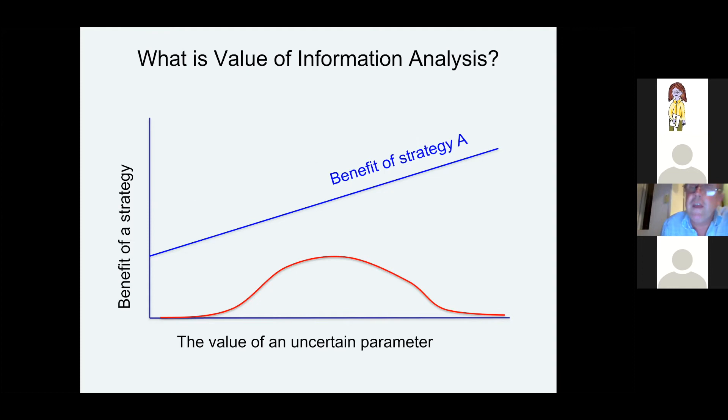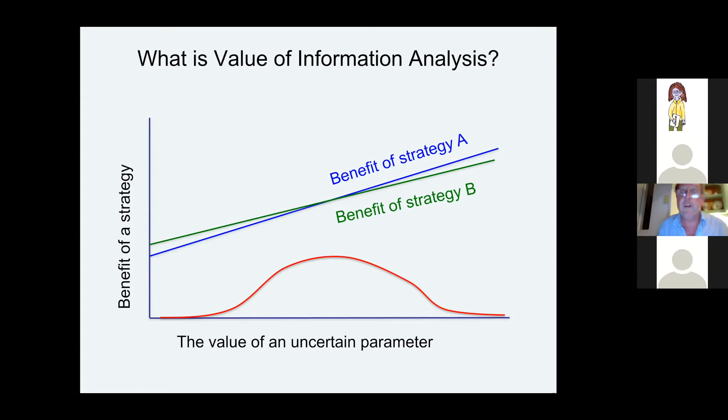Of course, it gets more interesting when the value of an uncertain parameter — adult death rate or, often, a movement parameter for many species — would change which strategy is best if it shifted from high to low. But in this case, if the difference in benefit is so tiny, the money, time, and effort put into resolving that parameter may not be worth it. It could be, but it might not.